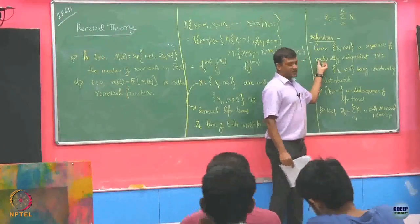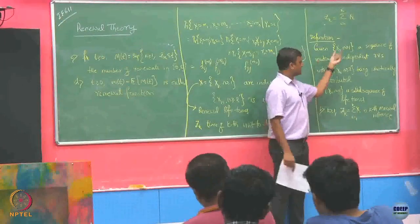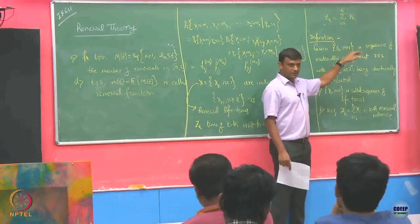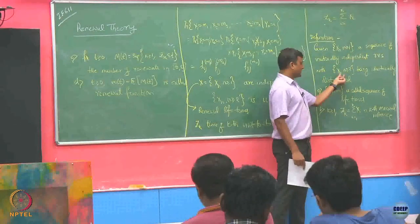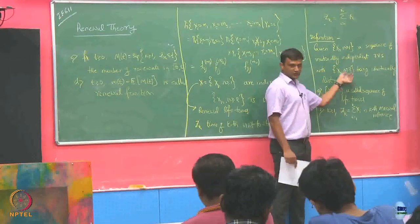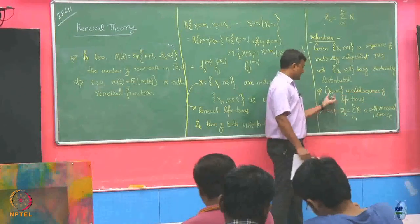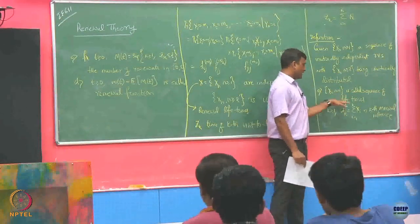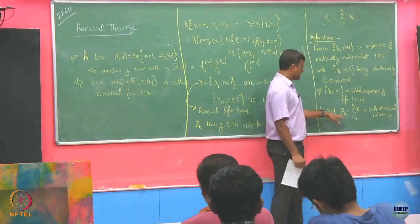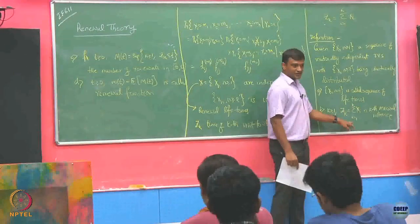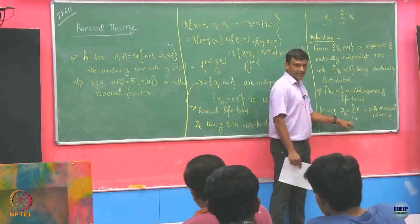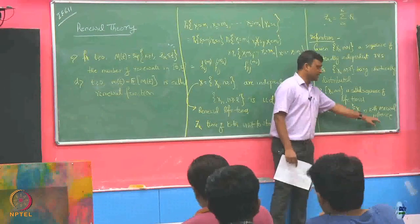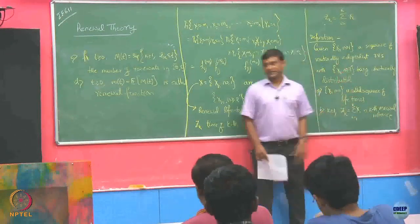So we have already motivated this: suppose we have a sequence of independent random variables X_n, with X_n for n greater than or equal to 2 being identically distributed. We call such a sequence the sequence of lifetimes. And Z_k, defined as the sum of the first k X_i's, we define as the kth renewal instance. So Z_k denotes the kth renewal instance.